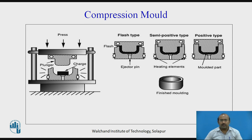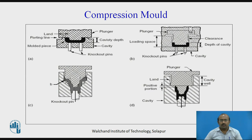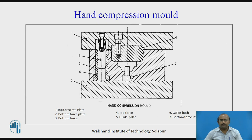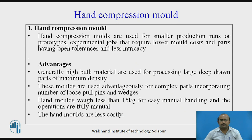Four different varieties are shown here in the figure. The hand compression mold consists of top force, red plate, bottom force plate, bottom force, top force, guide pillar, guide bush, and various other parts. Hand compression molds are used particularly with manual effort — for smaller production runs or prototype experimental jobs that require lower mold cost and parts having open tolerance and less intricacy.